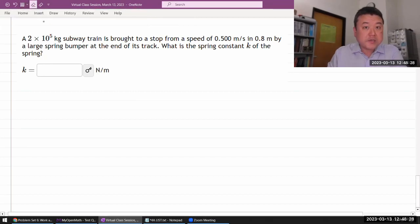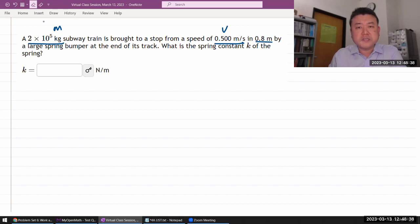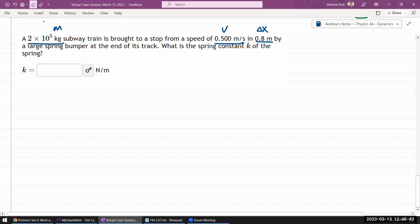Okay, this is what the question says. It has some mass. A subway train is brought to a stop from some speed. That sounds low. In a distance by a large spring bumper at the end of its track. Okay, what is the spring constant k?